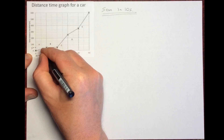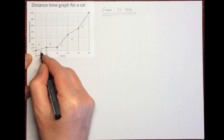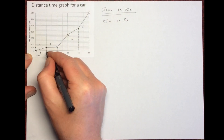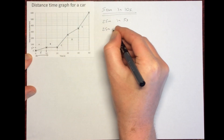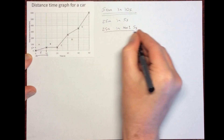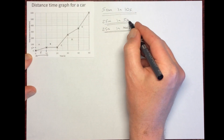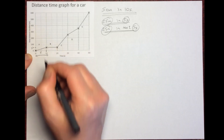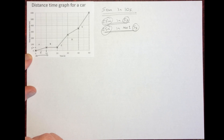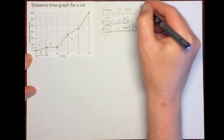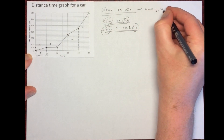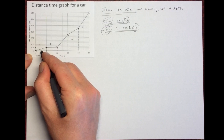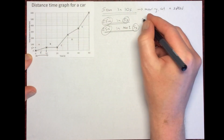If we break this graph into sections, over the first five seconds we travel 25 meters, and over the next five seconds we travel another 25 meters. So when we split this down into smaller units of time, we're traveling the same distance in each unit — which tells us the object in section A is moving at a constant speed.